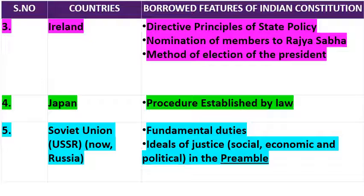Next है Japan। Japan के constitution से क्या borrow किया गया है? Procedure Established by Law — याद हो आपको तो Article 21 में आपने यह word पढ़ा होगा: 'No person shall be deprived of his life or personal liberty except according to procedure established by law।'